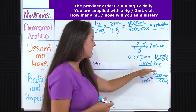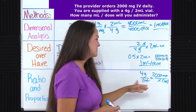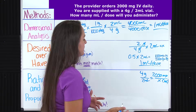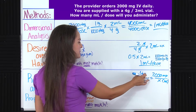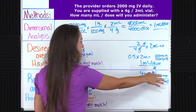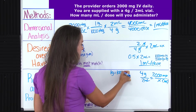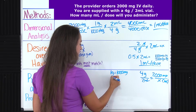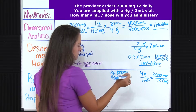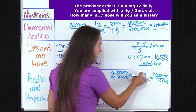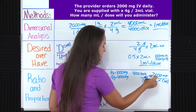We have the same type of units — grams and milligrams — so let's convert. Using the metric table, we know that one gram equals 1000 milligrams. So if I have four grams, that's going to equal 4000 milligrams. What I want to do is erase the four grams and put 4000 mg instead. Now we have milligrams matching milligrams and milliliters matching milliliters — we are good. So now let's cross multiply.